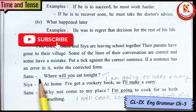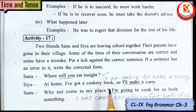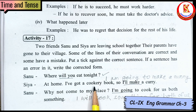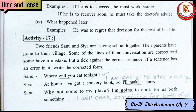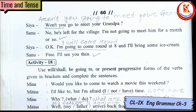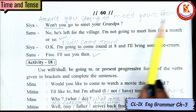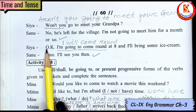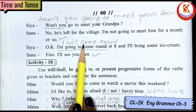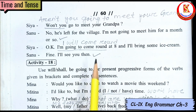Activity 17: We have to identify correct and incorrect sentences about future forms. 'Where will you eat tonight?' — correct. 'At home, I have got a cookery book. I am going to make a curry. Why not come to my place?' — 'I will cook something for both of us' — when we decide on the spot, we use 'will'. 'Won't you go to meet your grandpa?' — correct. 'Sia has left for the village. I am not going to meet him for a month or so.' 'I will come round at 8 and I will bring some ice cream.' — correct. 'I will see you then.'